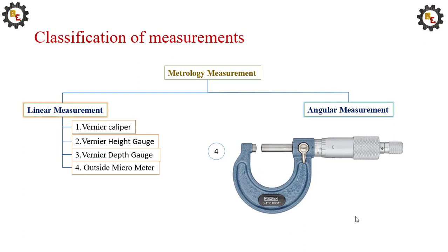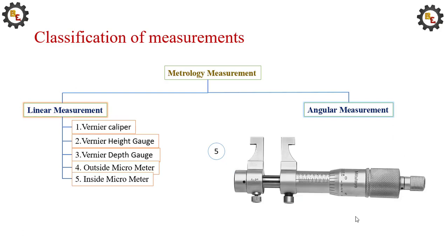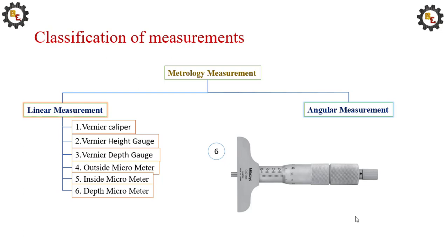Outside micrometer is used to measure the thickness of an object. Inside micrometer can measure the inside dimensions, for example, the inside diameter of a hole. Depth micrometer is used to measure the depth of a hole.